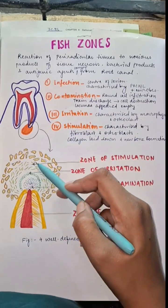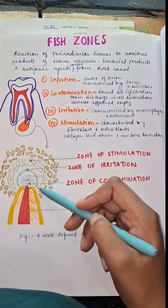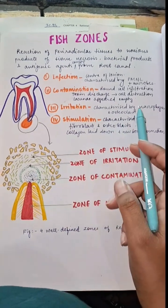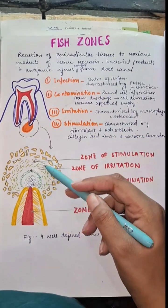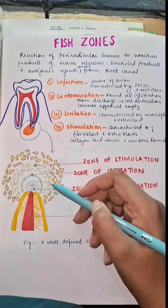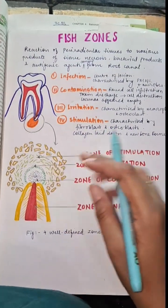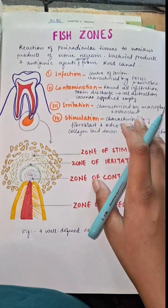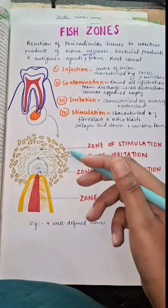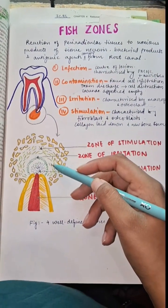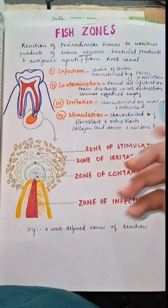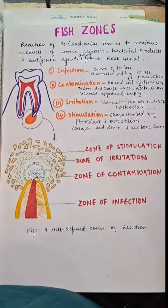Adjacent to that is the zone of irritation, characterized by macrophages and osteoclasts. Macrophages are phagocytic cells that digest the collagen framework, and osteoclasts digest the destroyed bone tissues. Those destroyed tissues are eaten up by macrophages and osteoclasts. This zone of irritation also signifies the body's initial attempt to repair and clean up.